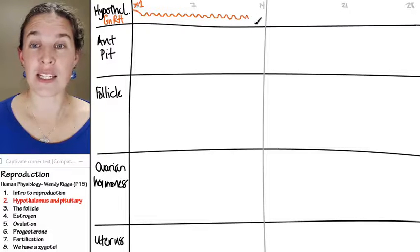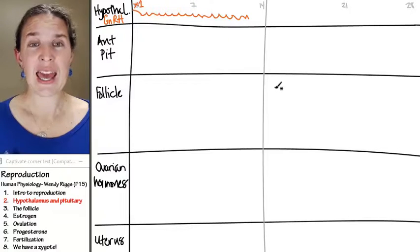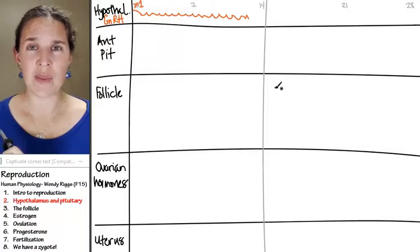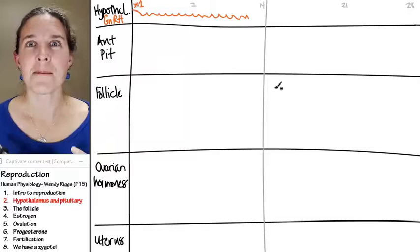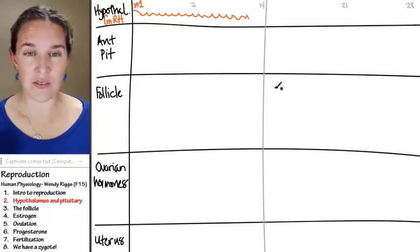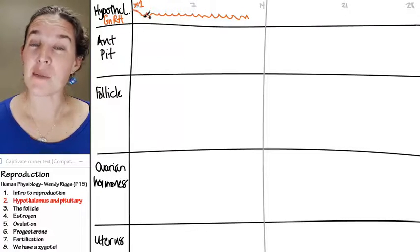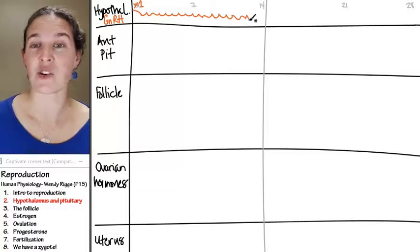And in fact, gonadotropin releasing hormone is kind of squirted out from the hypothalamus in pulses. And the pulses are like every 90 minutes, you get another little squirt of gonadotropin releasing hormone. So I tried to draw that for you by making it kind of wiggly like this. But at the beginning of your cycle, you have a little rise in gonadotropin releasing hormone.